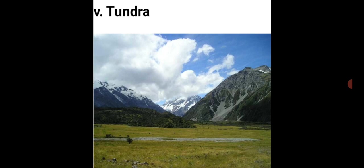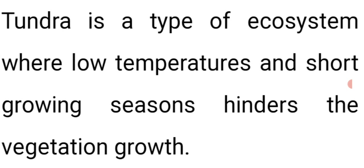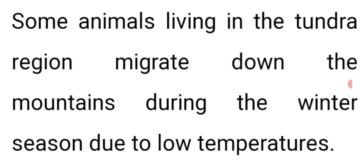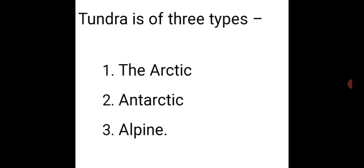Tundra is a type of ecosystem where low temperatures and short growing seasons hinder vegetation growth. Some animals living in the tundra region migrate down the mountains during winter due to low temperatures. Tundra is of three types: Arctic, Antarctic, and Alpine. The next lecture will cover the remaining ecosystems in more detail.